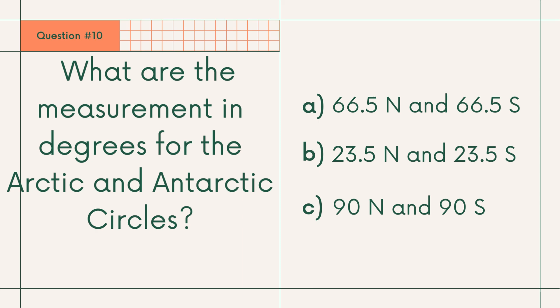Question number 10: What are the measurements in degrees for the Arctic and Antarctic Circle? A. 66.5 north and 66.5 south, B. 23.5 north and 23.5 south, or C. 90 degree north and 90 degree south. Answer: A. 66.5 north and 66.5 south.